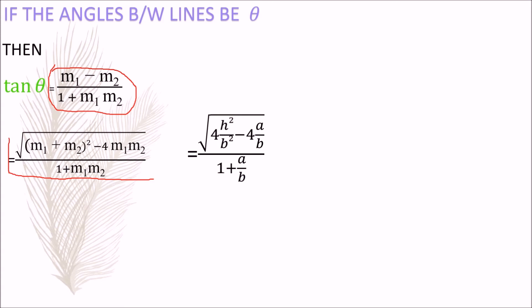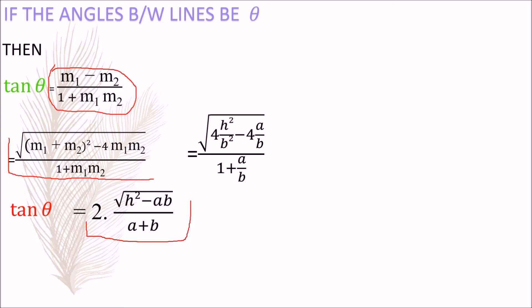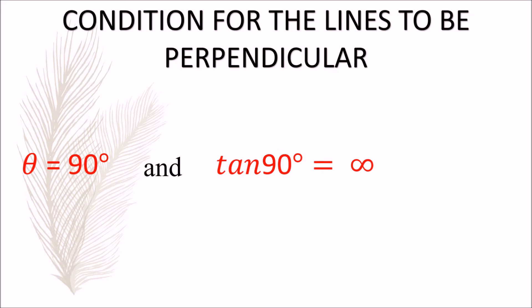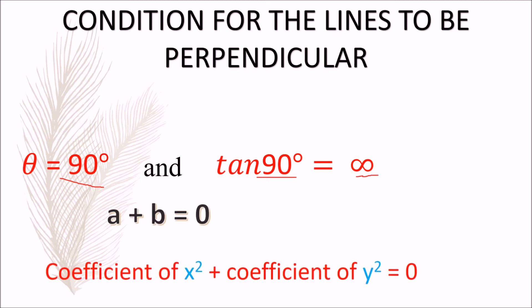Simplifying this expression by taking 4 outside the square root, tan θ = 2√(h² - ab) / (a + b), or θ = tan⁻¹[2√(h² - ab) / (a + b)]. Now, to find the condition for lines to be perpendicular: if the lines are perpendicular, θ = 90° and tan θ = infinity. In that case, a + b = 0, meaning the coefficient of x² plus the coefficient of y² equals zero.